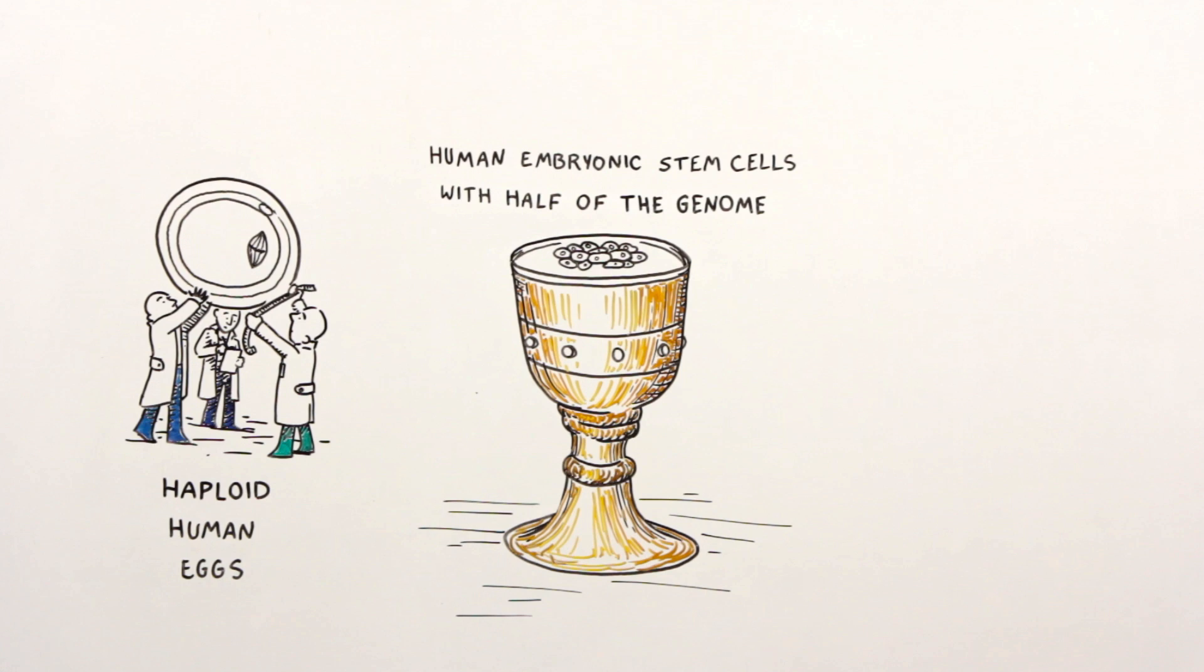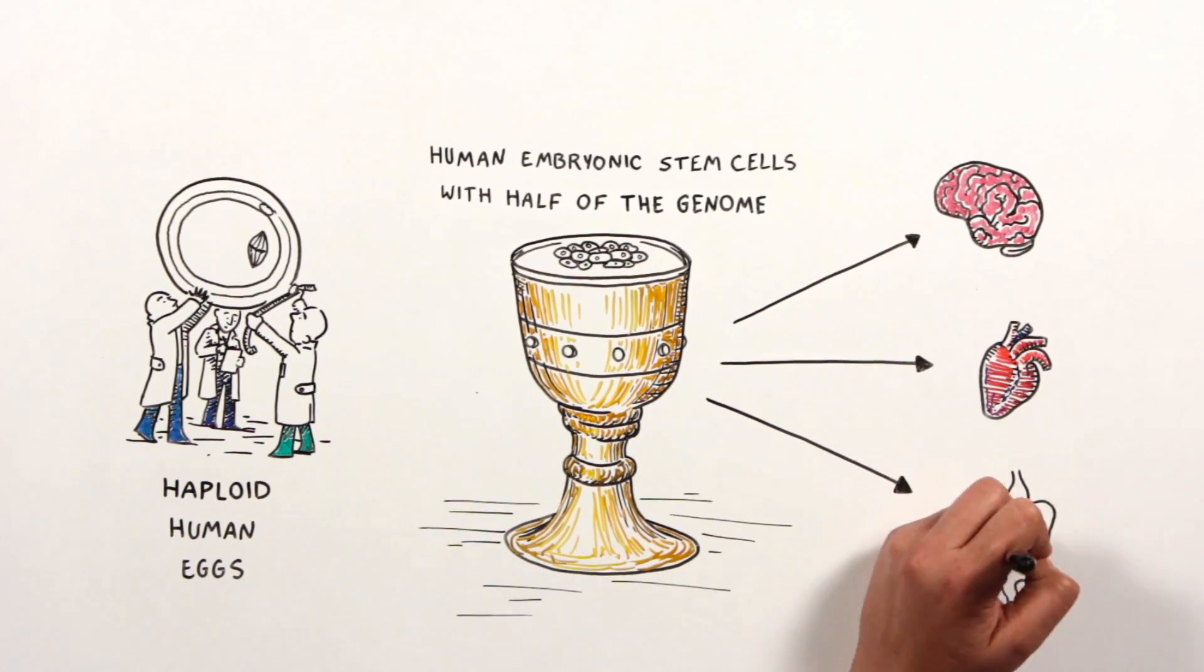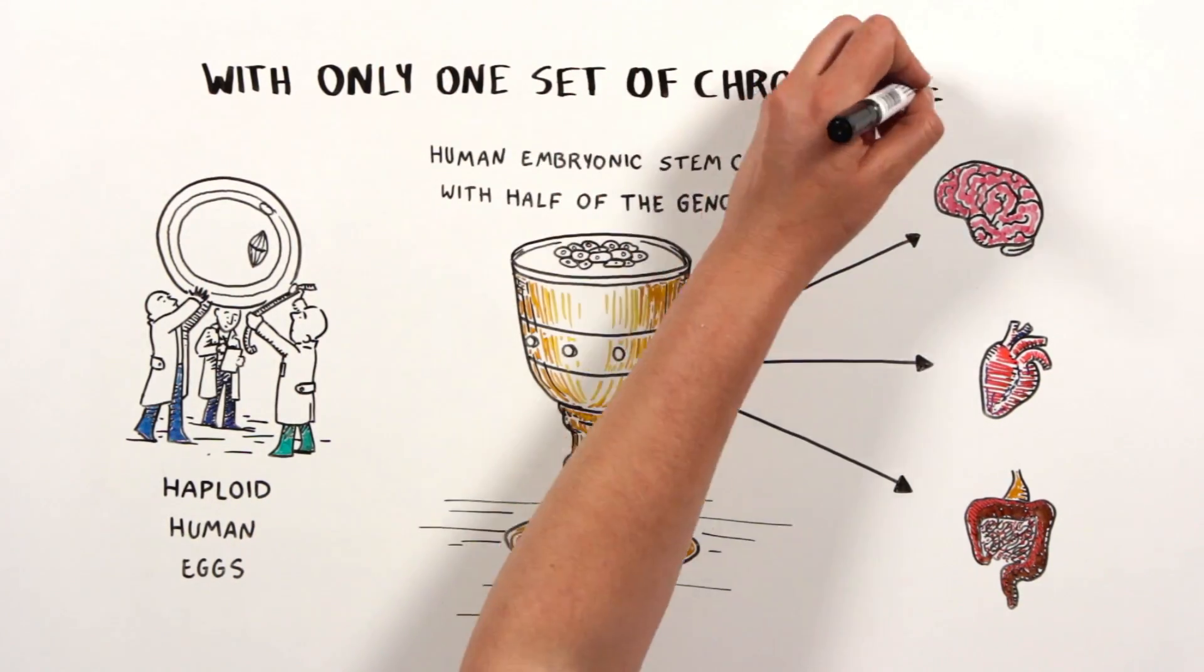And amazingly, the haploid embryonic stem cells could become brain cells, heart muscle cells, gut cells, and more, with only one set of chromosomes.